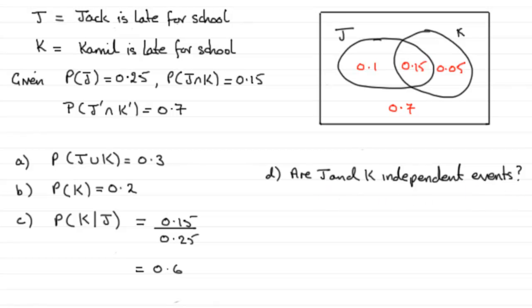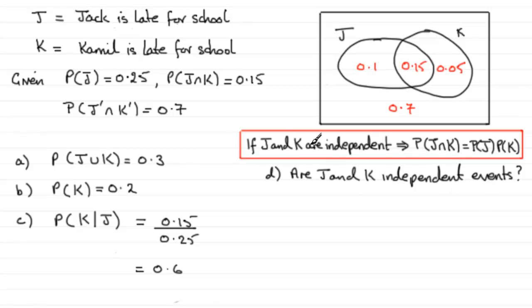And to do something like this, what we should know is that if J and K are independent, it would follow that the probability of J intersected with K equals the probability of J times the probability of K. This is one way of showing that they're independent.